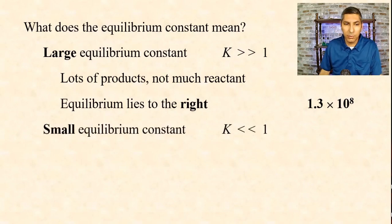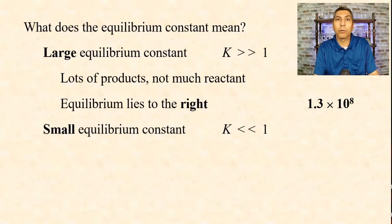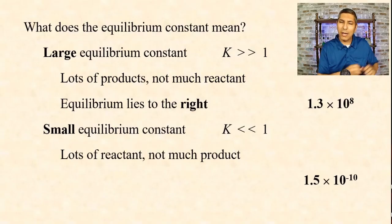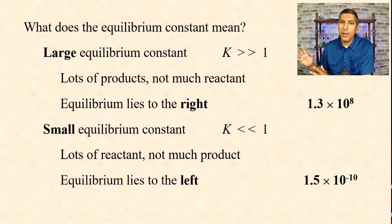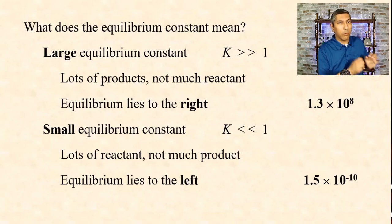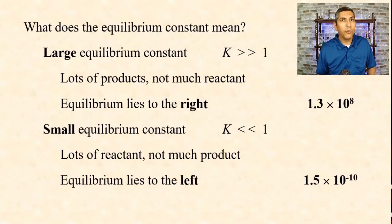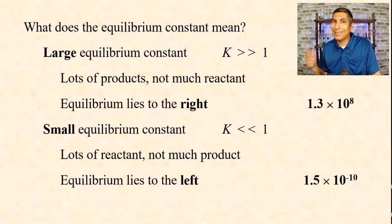If you have a small equilibrium constant — one much smaller than one, on the order of one one-thousandth or even smaller — that means we're going to have lots of reactant left over and not a whole lot of product. We say equilibrium lies to the left, because reactants are on the left side of the arrow. In the last example we just did, the equilibrium constant was on the order of 10 to the negative tenth — a very small number — so we had a whole lot of reactants and not a lot of product, which is exactly what the problem showed.